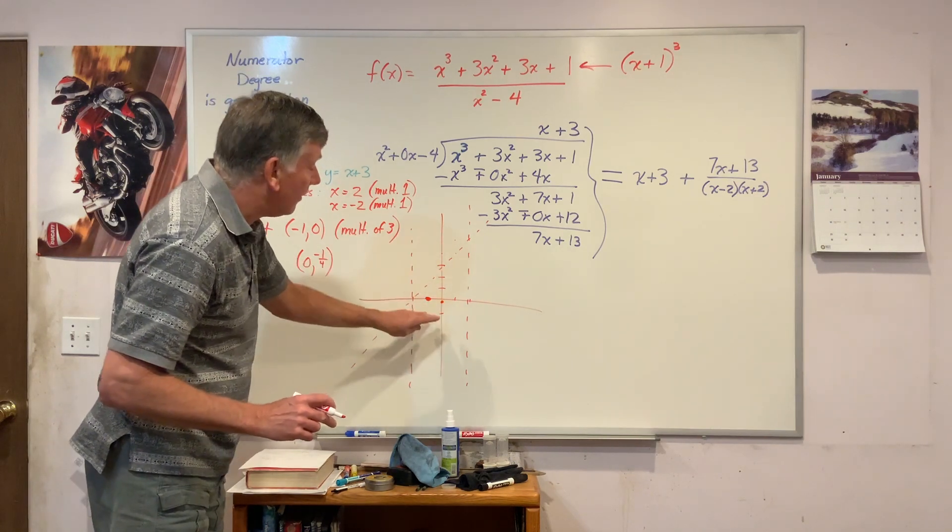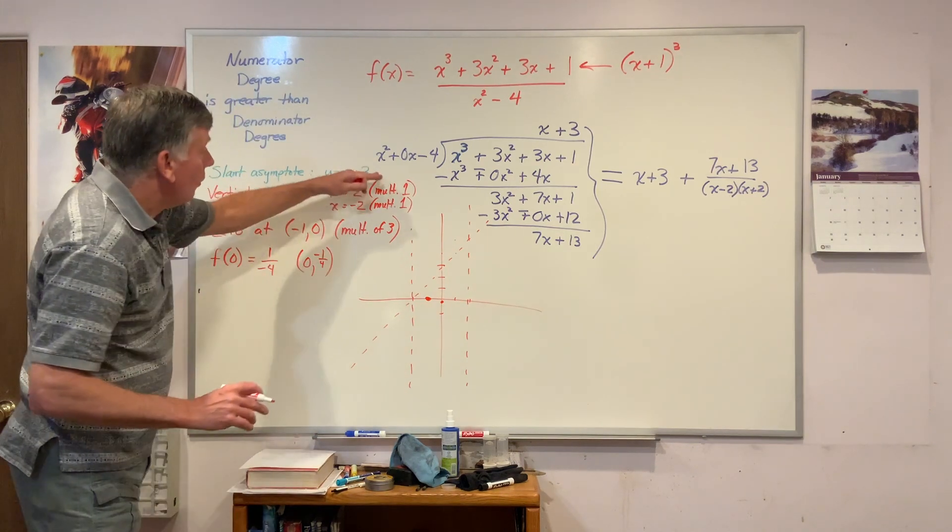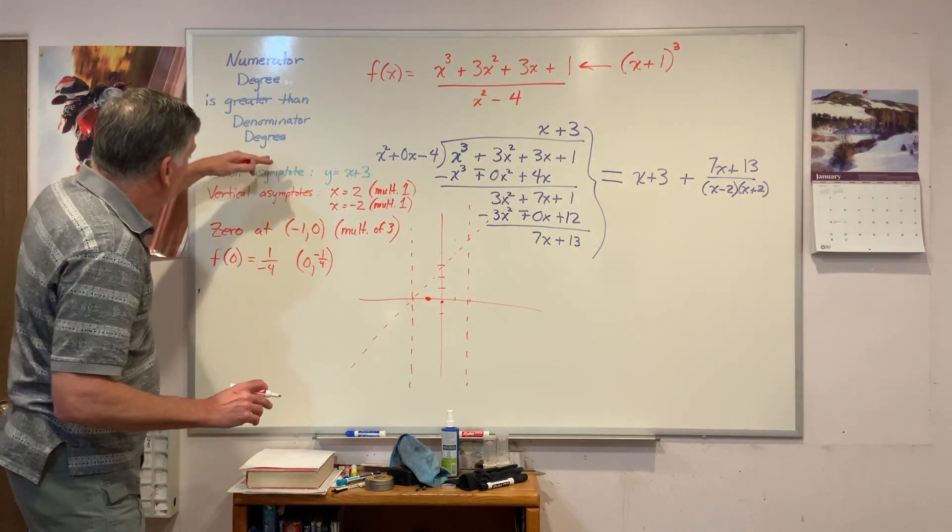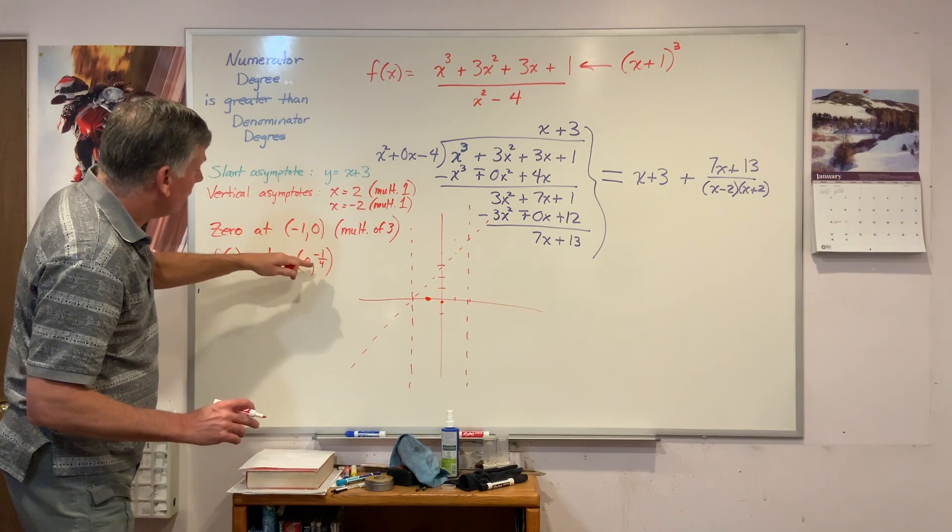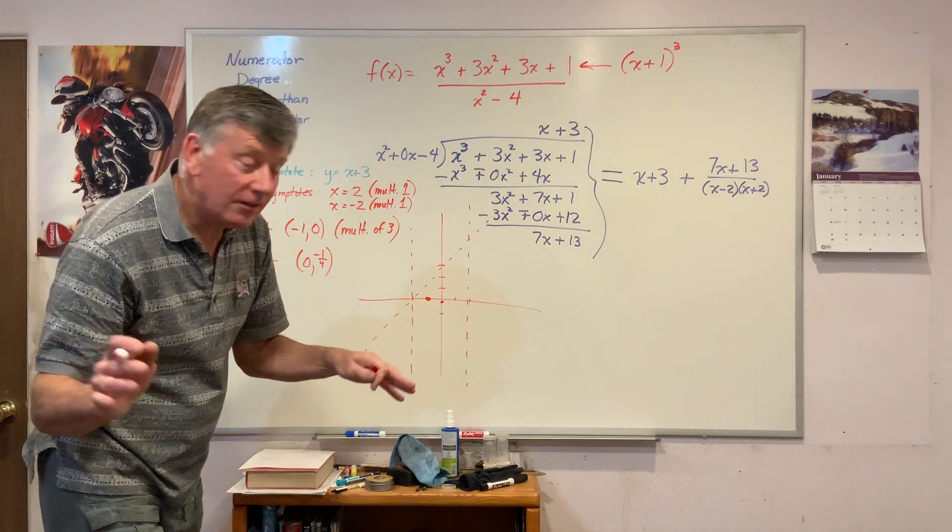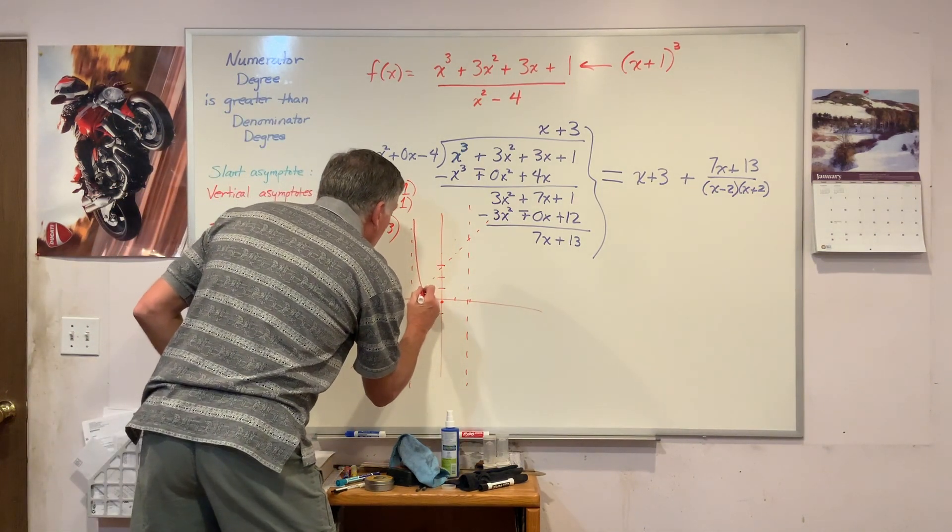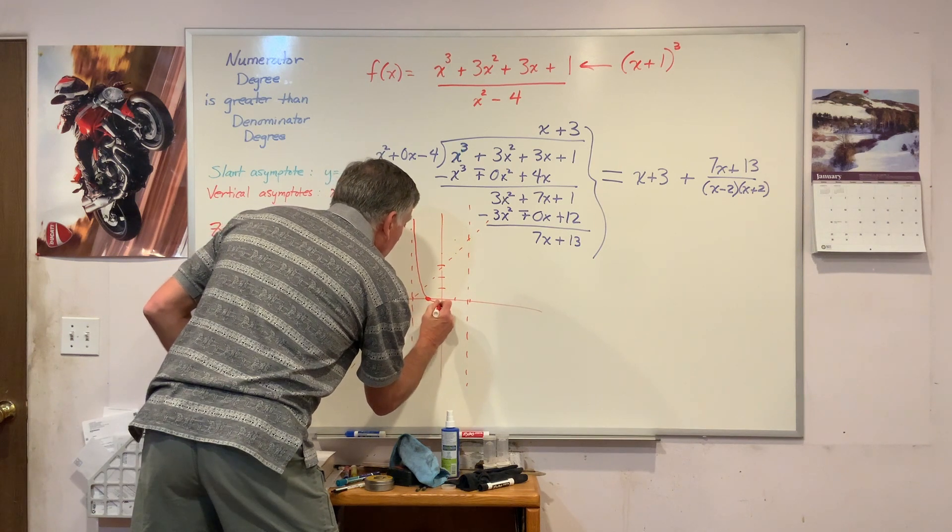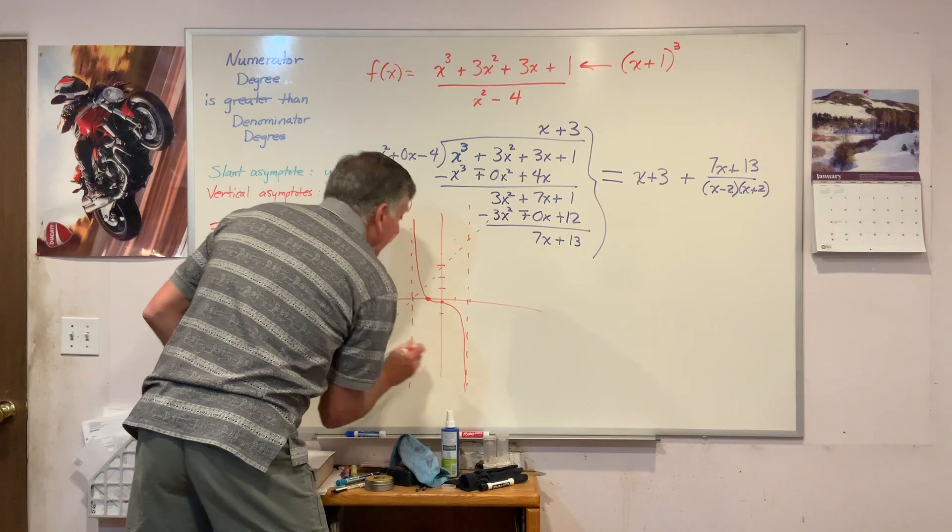From these points and these asymptotes, I'm going to now graph this line. Knowing from my multiplicity, knowing what my asymptotes are, knowing what my zeros and my y-intercept is, there's nothing else that works. It has to come here, cross through, go through that point, come down like this.